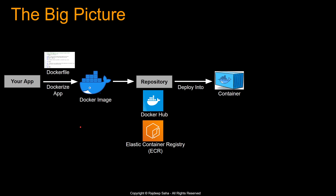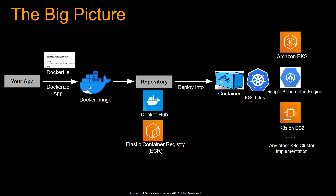At this point, you can run your application as a container on any platform that supports Docker. One of the most popular platforms to run your container is Kubernetes. Kubernetes has different flavors — we have Amazon EKS, which is the most popular, and we also have Google Kubernetes Engine. Since Kubernetes is open source, you can also install it on vanilla EC2s and run your container there, or even run it in any Kubernetes cluster implementation on-prem.